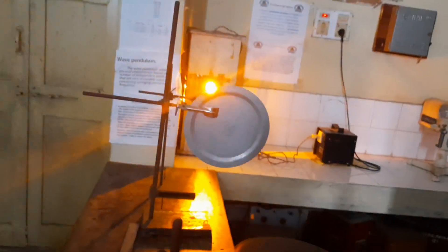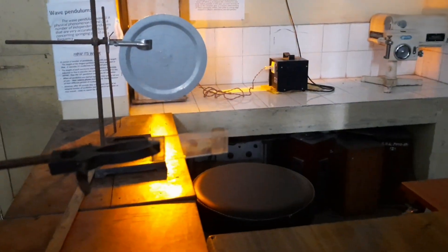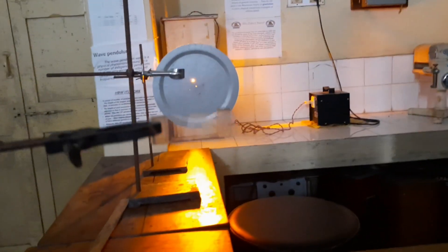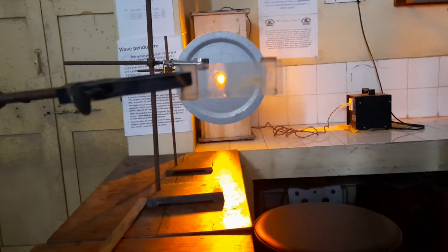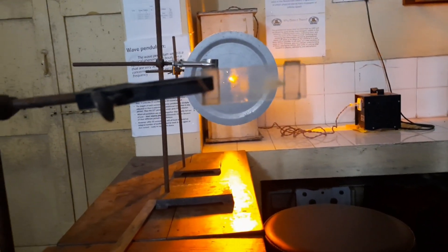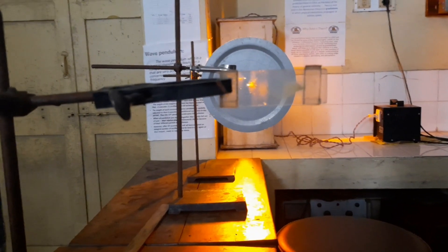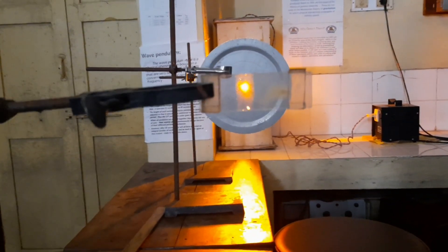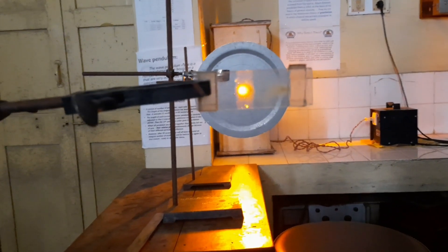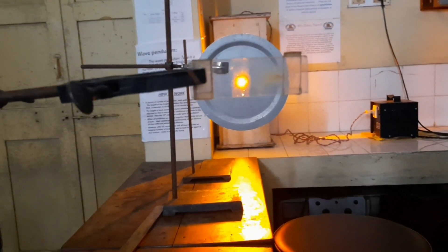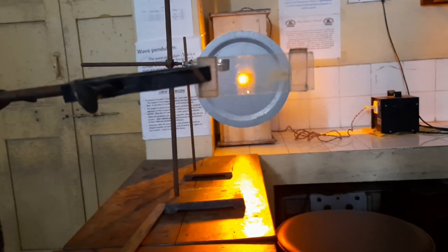This is the way you should make the arrangement. All these must be in a straight line: the source, lens, and the disc, and this glass plate. You can see when you observe through this glass plate, here you will get the dark and bright rings.